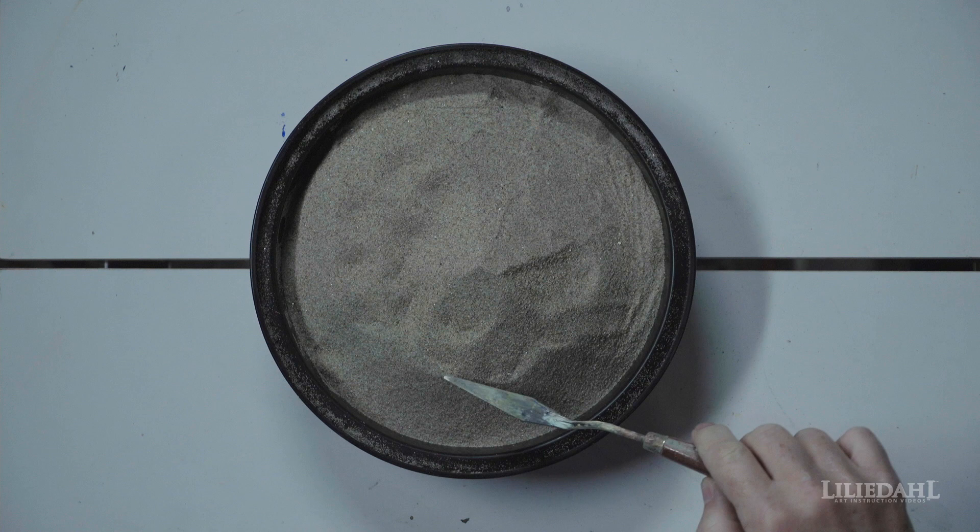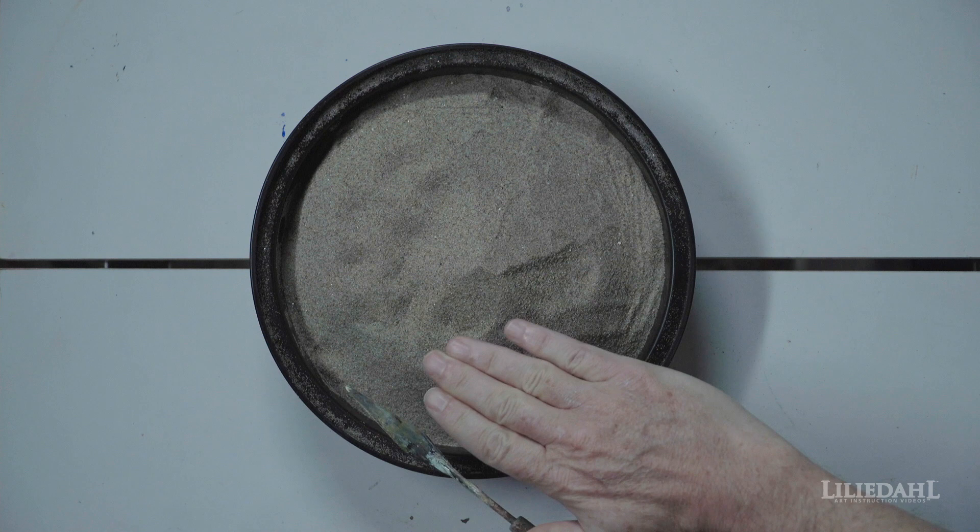The hard edge is coming where the direct light is going to hit the lip of that bend. The slope, as the gravity pulls the sand down, is going to give it a soft edge.